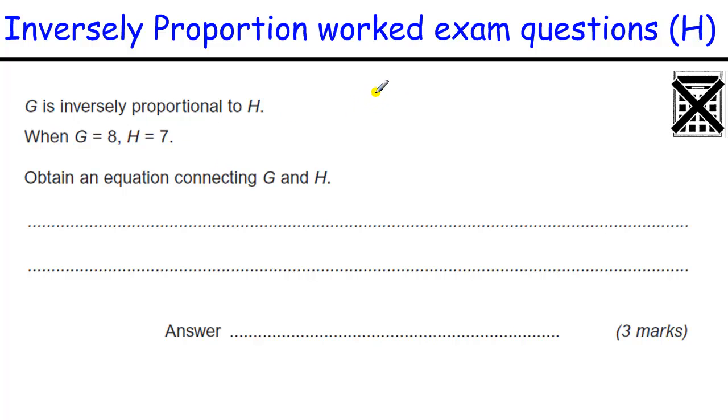Another inverse proportional question. G is inversely proportional to H, so it's proportional to 1 over H. G equals K over H. G equals 8 when H is 7, so 8 equals K over 7, which implies that K equals 56, because 56 divided by 7 is 8. So obtain the equation: G equals 56 over H.